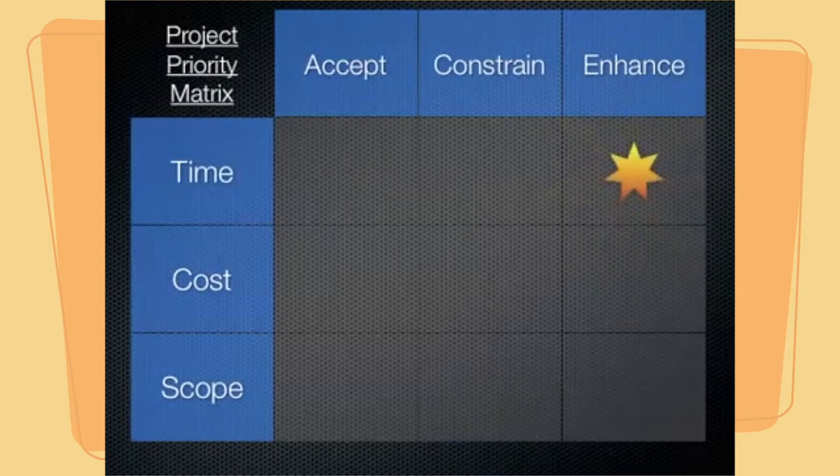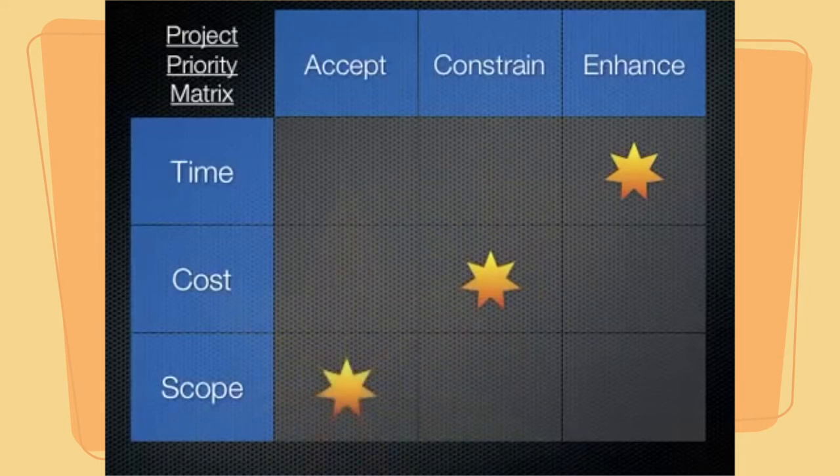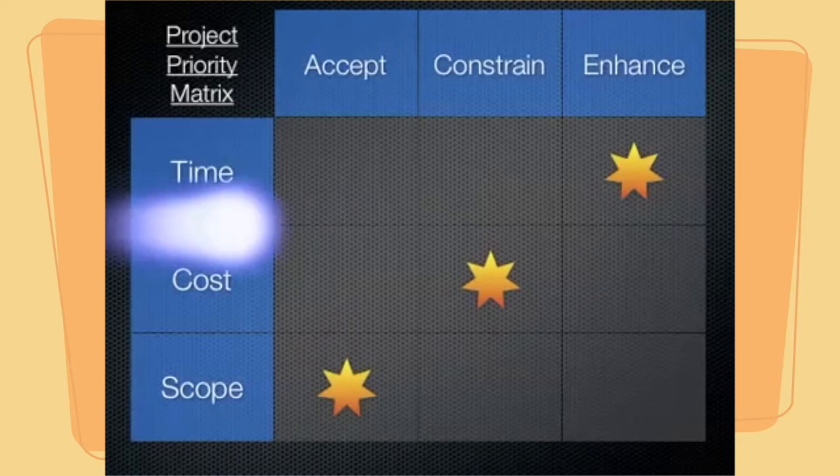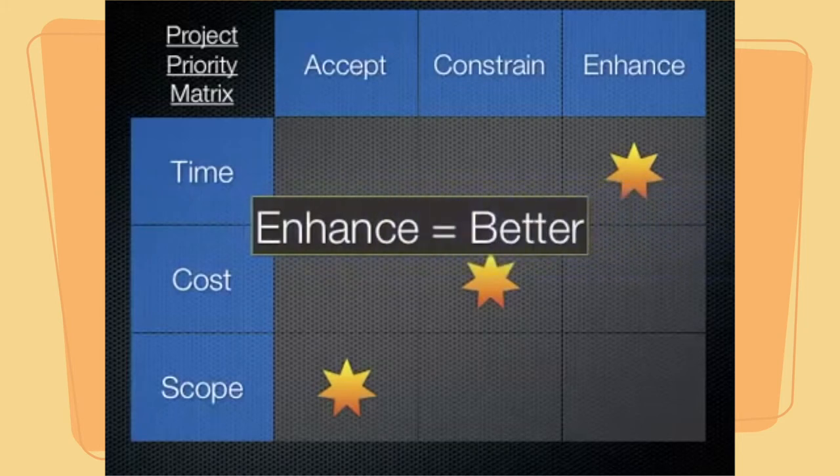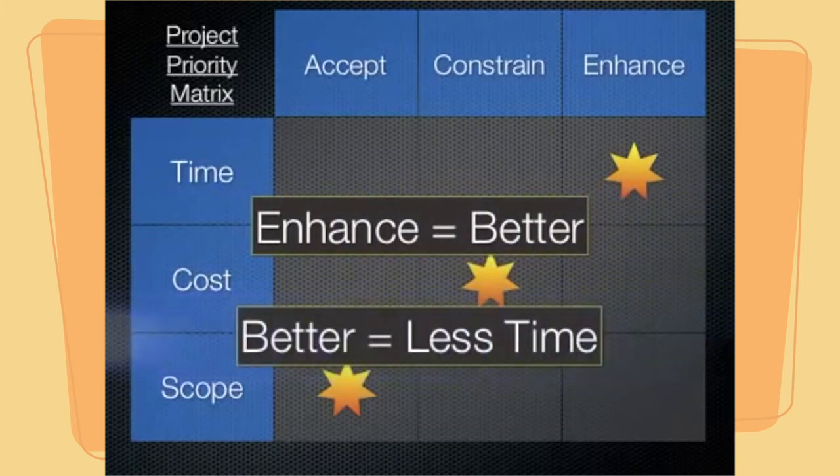Let's look at one other example here where we are going to enhance time. We are going to constrain costs. And we are going to accept changes in the scope. Once again, we are using this word enhance to mean make something better. So in this case with time, we consider that a project is an enhanced time if the project is done in less time.